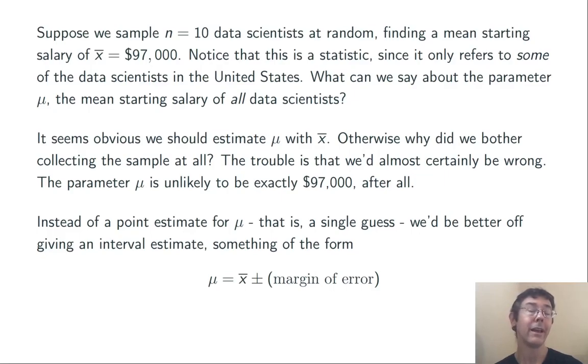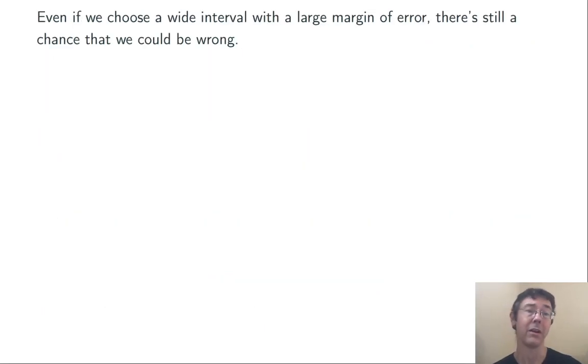So, given that that estimate of $97,000 isn't going to be exactly right, we should give an interval estimate. An estimate of the form x-bar plus or minus some margin of error. The big question is, how exactly do we go about finding that margin of error?